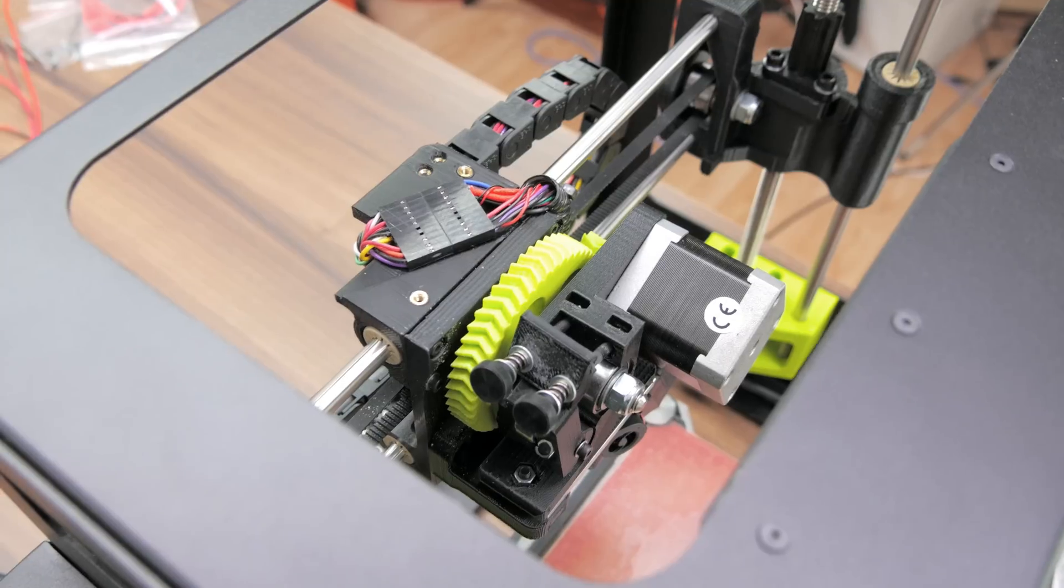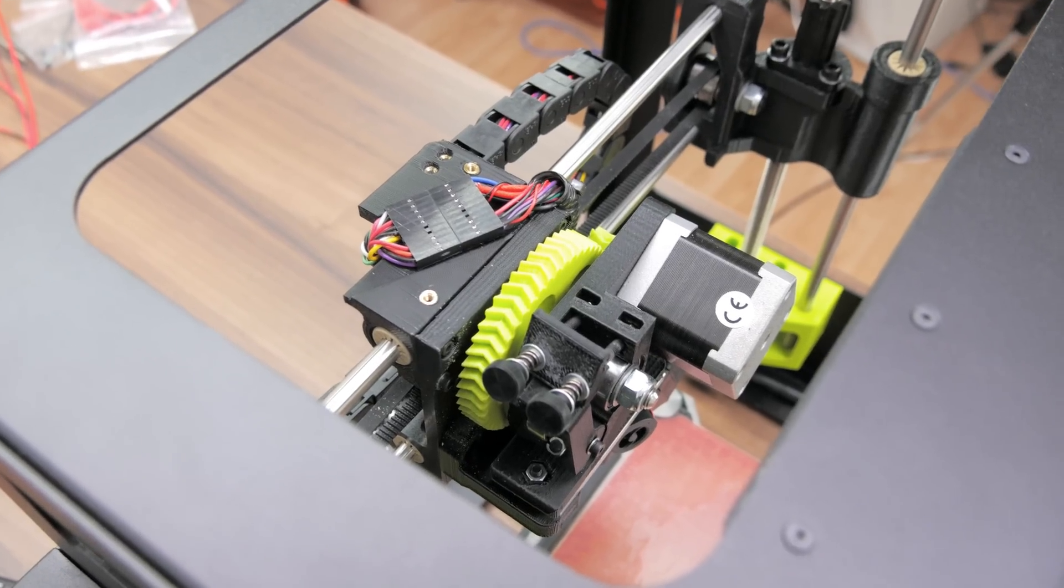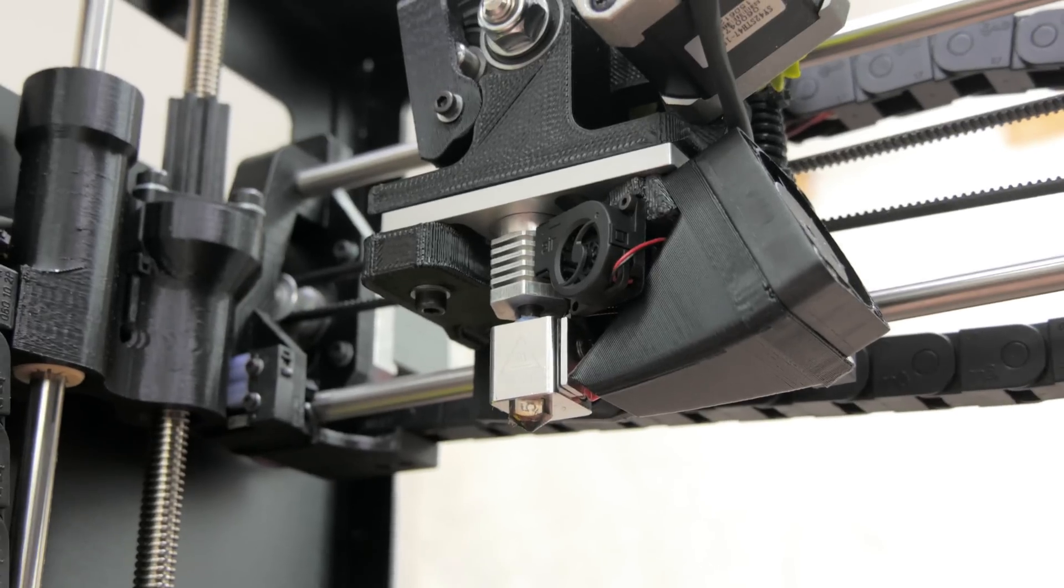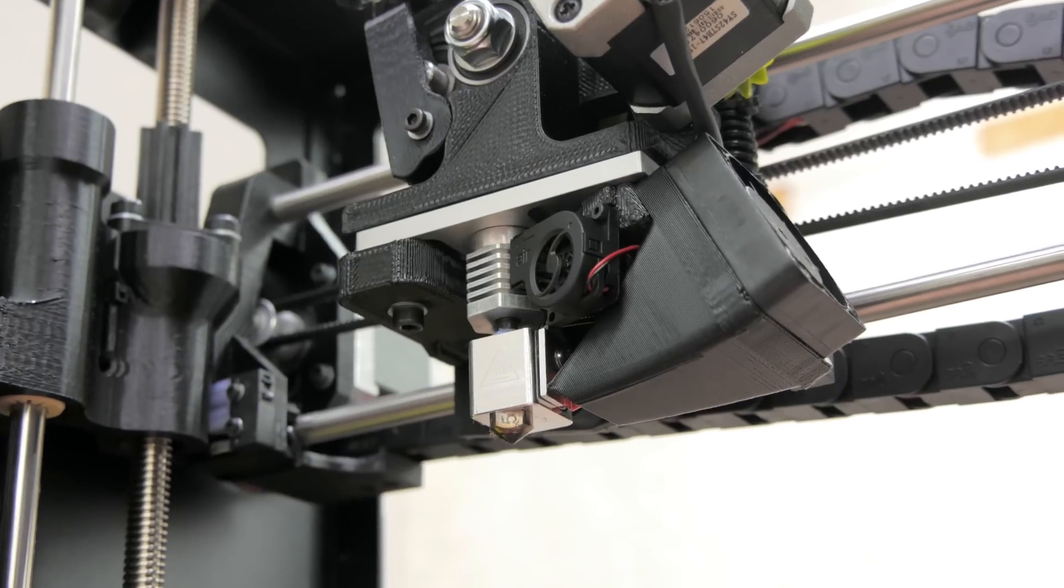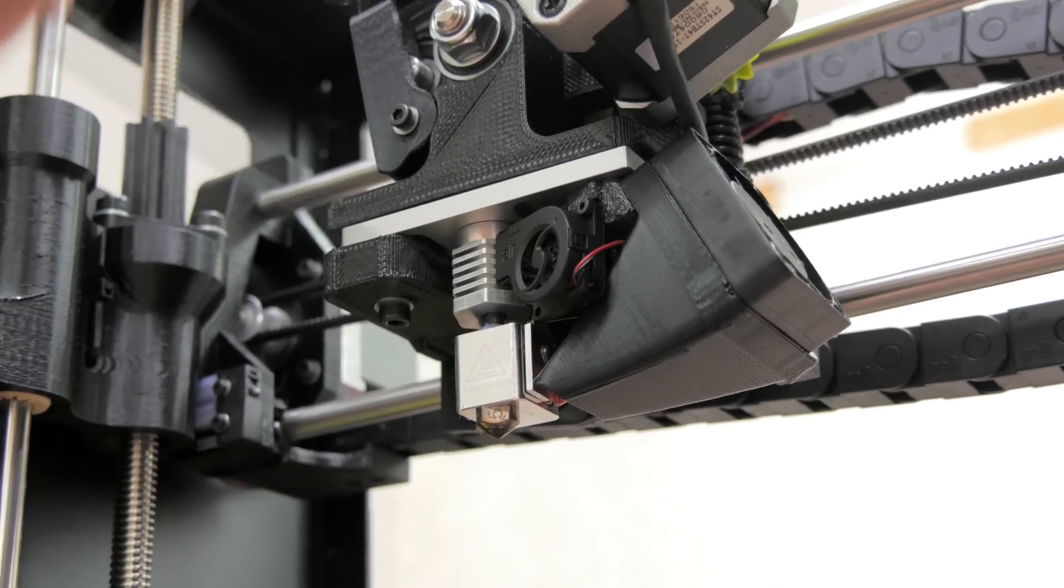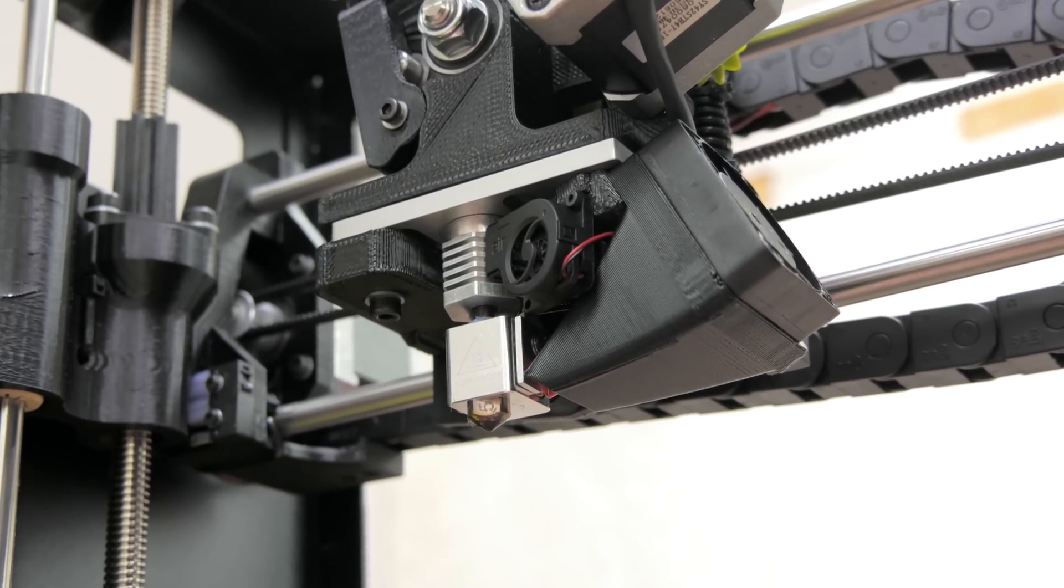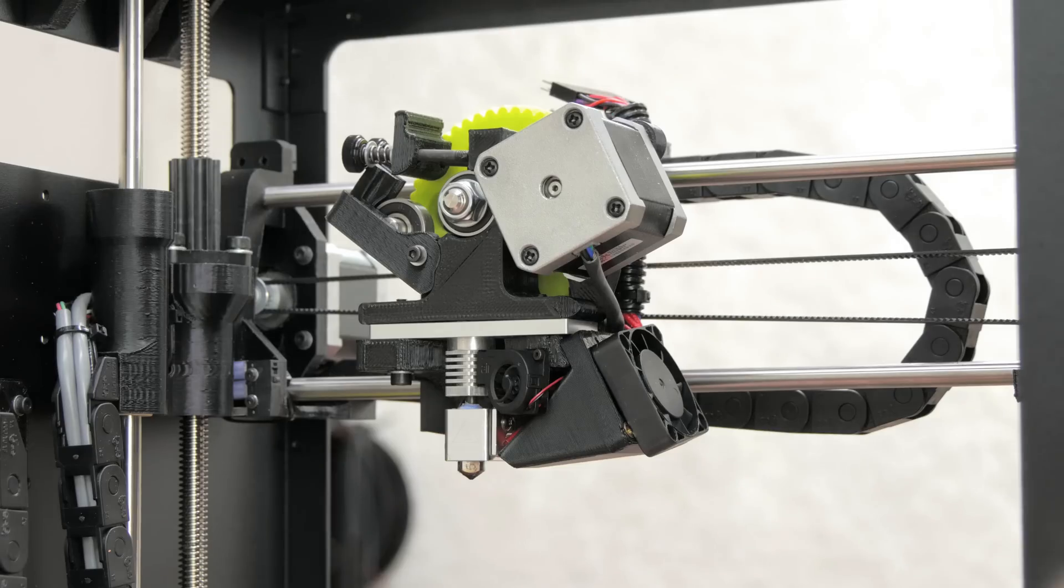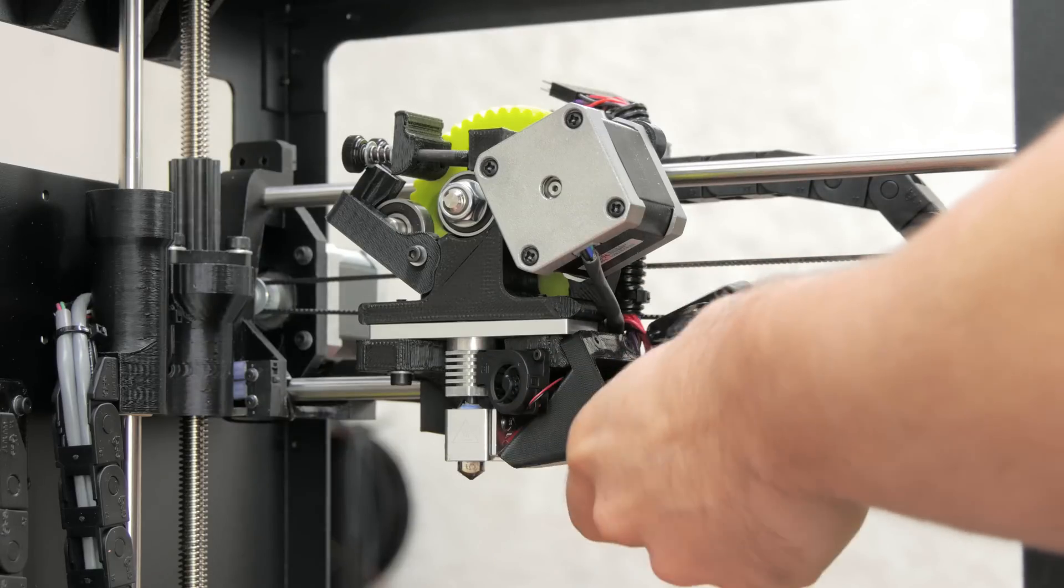I'm going to show you this process on the Lulzbot Mini, which has a relatively standard Greg's Wade extruder. To get started, we'll need to get at the two M4 screws that are holding the entire hotend and extruder assembly to the X carriage.